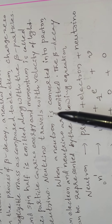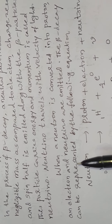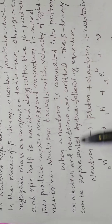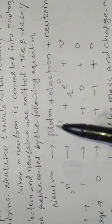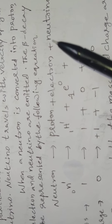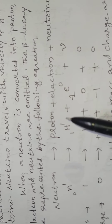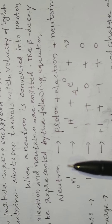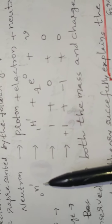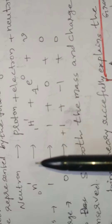When a Neutron is converted into a proton, an electron and a Neutrino are emitted. The beta decay can be represented by the following equation: a Neutron gives a proton plus an electron plus a Neutrino. The proton remains inside the nucleus, while the electron and Neutrino are emitted from the nucleus when the Neutron is converted into a proton within the nucleus.